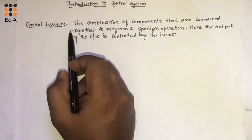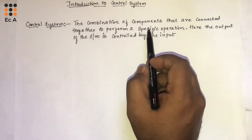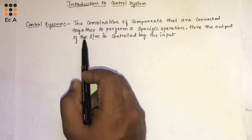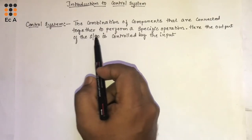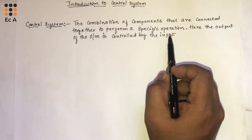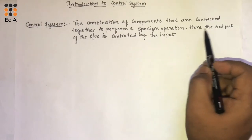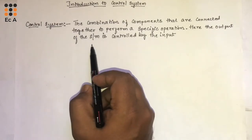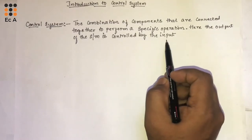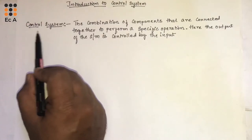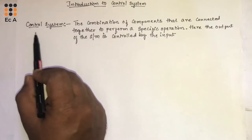A control system is the combination of components that are connected together to perform a specific operation. The output of the system is controlled by the input — that's why the name control system.